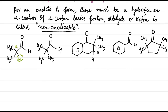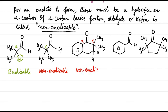If the alpha carbon has one hydrogen, it is enolizable. If the alpha carbon doesn't have any hydrogen, it is non-enolizable. If none of the alpha carbons have any hydrogen attached, it is non-enolizable. If the alpha carbon has no hydrogen attached, it is non-enolizable. If none of the alpha carbons have any hydrogen attached, it is non-enolizable.